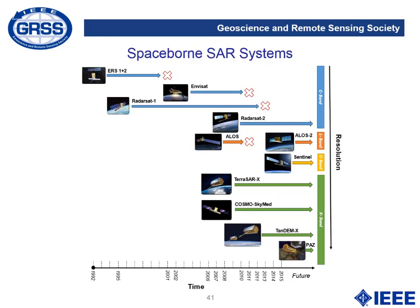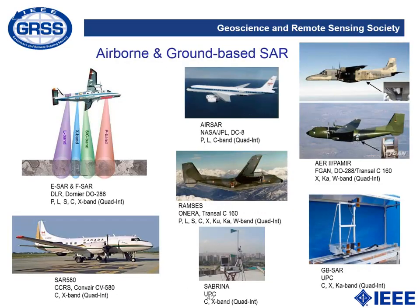To make a SAR, the only thing needed is a radar and a moving platform, which means SAR can also be developed using airborne or ground-based platforms. For the airborne case, we have the E-SAR and F-SAR from DLR, AirSAR from NASA JPL, PAMIR from FGAN, RAMSES from ONERA, and SAR-580 from CCRS. We can also have ground-based SAR — for instance, GBSAR developed at UPC, which is a radar mounted over a rail. There is also a bistatic configuration where the receiver is on the ground and commercial satellites are used as sources of opportunity.